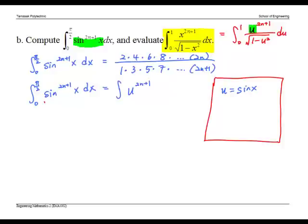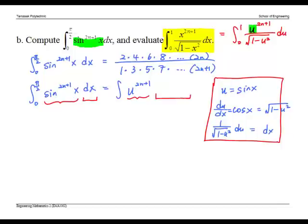We have replaced this part by this part. Next, let's look at dx. Differentiating u, we get cos x, which is also √(1-u²). Therefore, 1/√(1-u²) du equals dx. So we can replace dx by 1/√(1-u²) du.